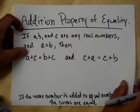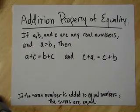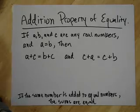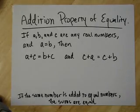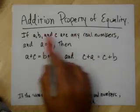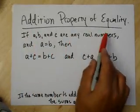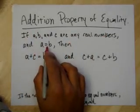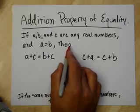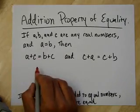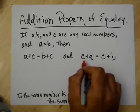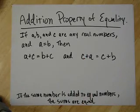Let's talk about some properties. There's really nice properties of the real numbers. There's a property of equality for addition that says that if A, B, and C are any real numbers, and A is equal to B, then the following is true. That A plus C equals B plus C. And the same thing, C plus A equals C plus B.